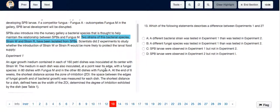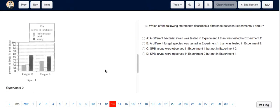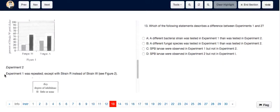Then, if you go down to experiment two, you can see that it says in one line: experiment one was repeated except with strain R instead of strain W. This means that both experiments were the same; the only difference was the bacterial strain. So the answer is A: a different bacterial strain was tested in experiment one than was tested in experiment two.